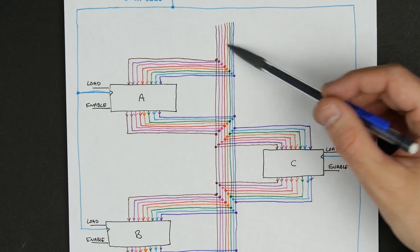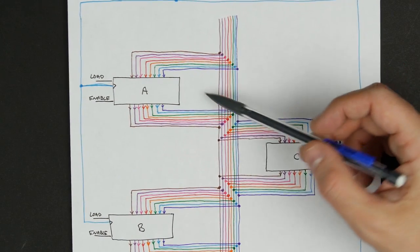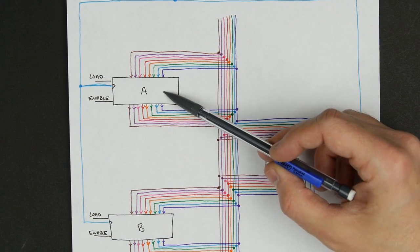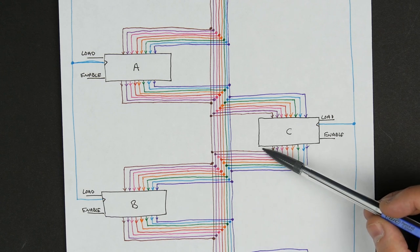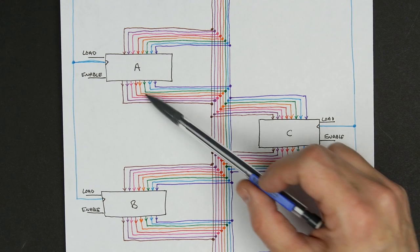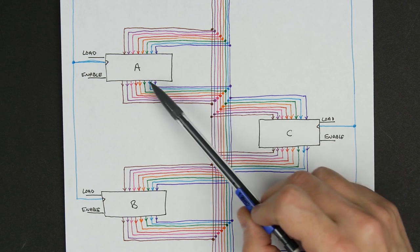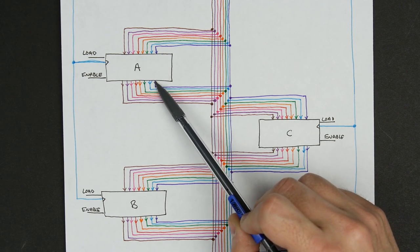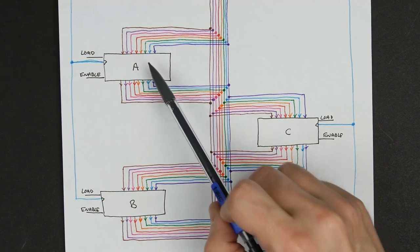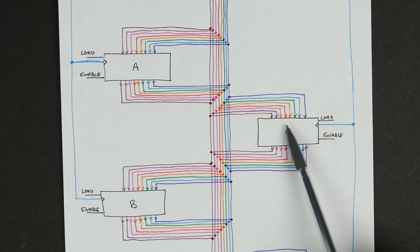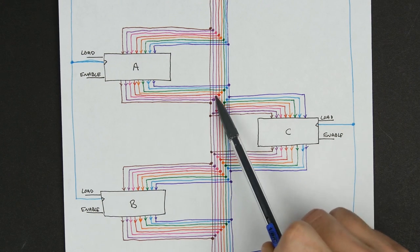One thing that's really important about a bus like this is we've got to make sure that only one of the things connected to the bus is outputting something at any point in time. Because if both of these modules are outputting to the bus at the same time, we're going to have some sort of problem.